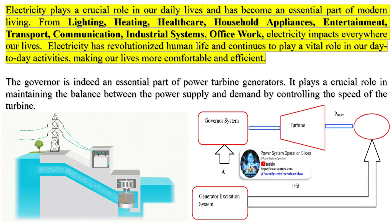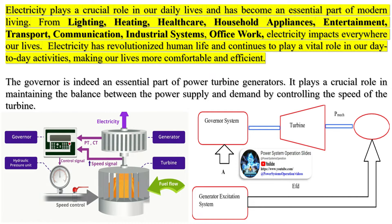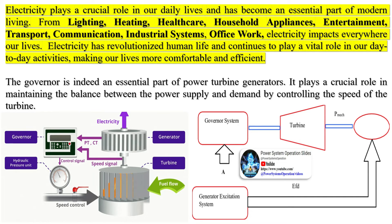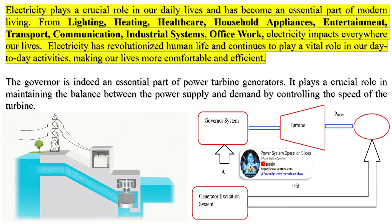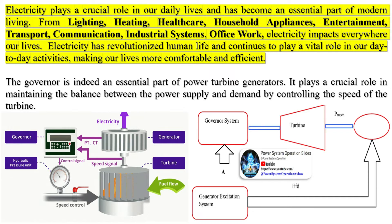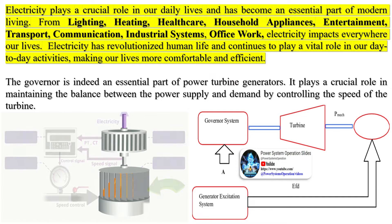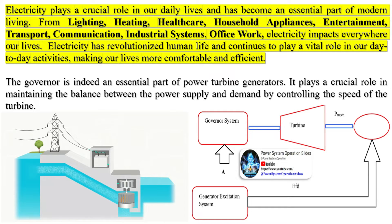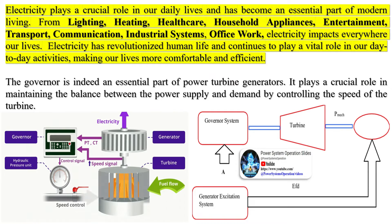Fourth, response to load changes: in droop mode, a generator's output and frequency are inversely proportional. When frequency decreases, output increases, allowing the generator to respond to more or less load requests. Fifth, prevention of overloading: this mechanism helps prevent overloading of generators and ensures a reliable power supply. Overall, speed droop is a fundamental control mechanism that ensures stability, load sharing, and protection of the system while responding effectively to changes in load.